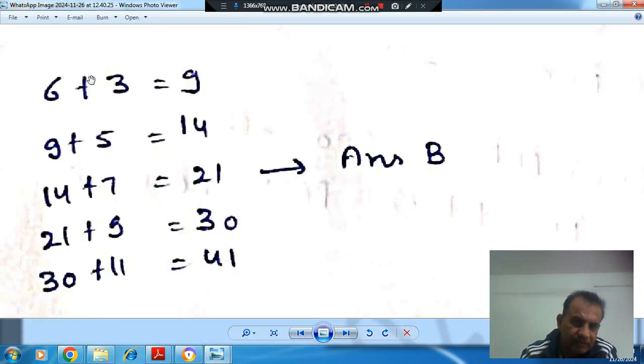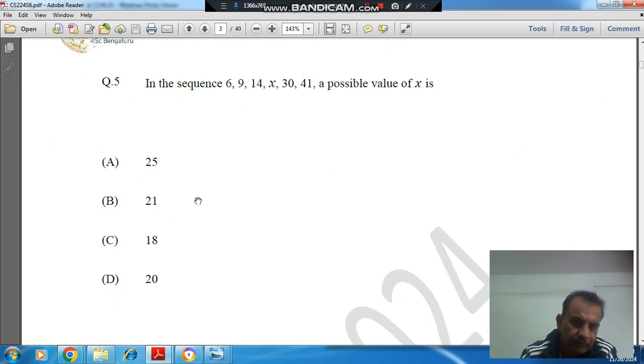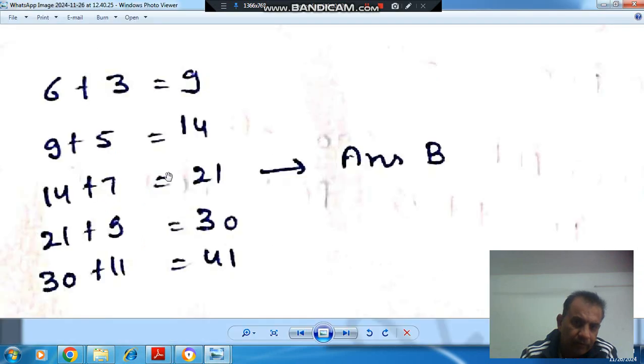So here, the first element is 6. If we add 3 to it, we get 9, the second element. And if we add 5 to 9, we get the third element, that is 14. So here we have odd numbers adding to the previous number.